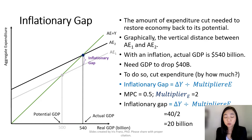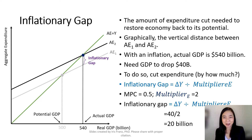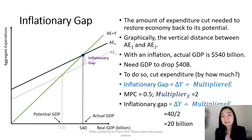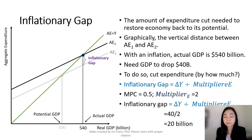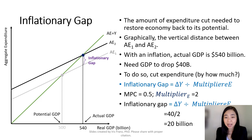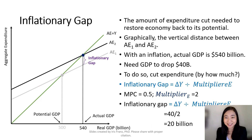Therefore, we need to cut aggregate expenditure — but by how much? By exactly the amount of the inflationary gap. The inflationary gap is equal to the desired reduction in GDP divided by the expenditure multiplier. In our example, we want our GDP to go down by $40 billion, and our expenditure multiplier is equal to 2. Therefore, the inflationary gap is equal to 40 divided by 2, which gives you $20 billion.